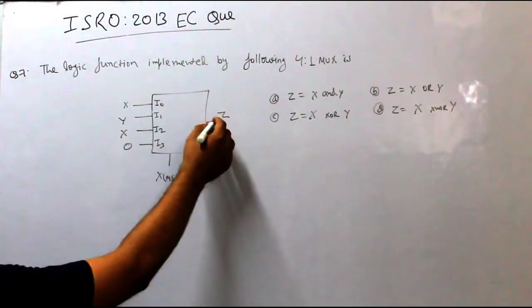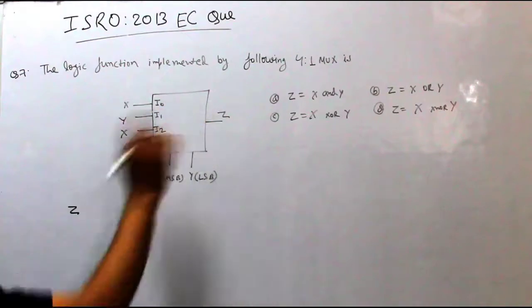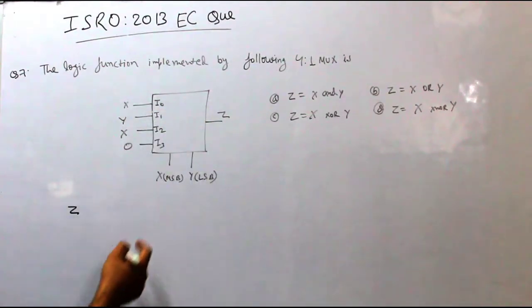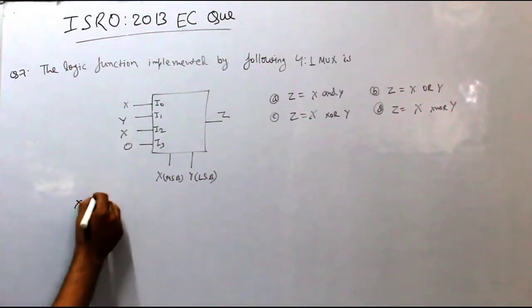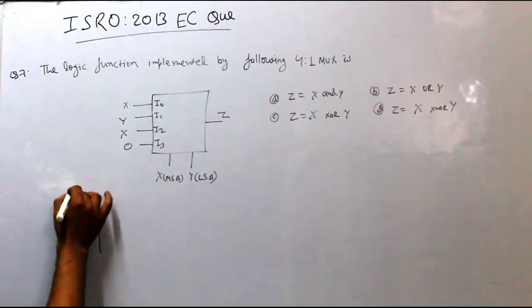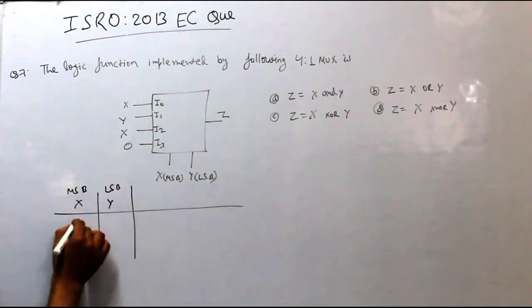A 4-to-1 mux has 4 inputs and 1 output. Different combinations exist where x is the MSB and y is the LSB.